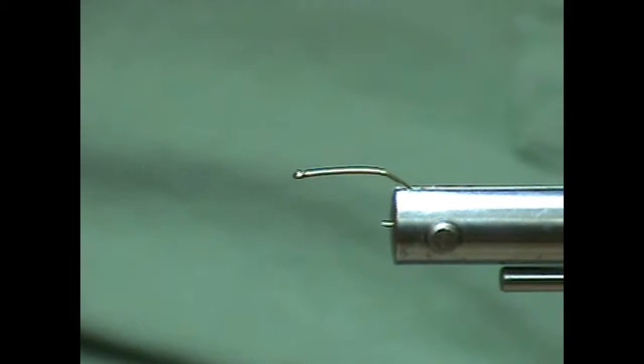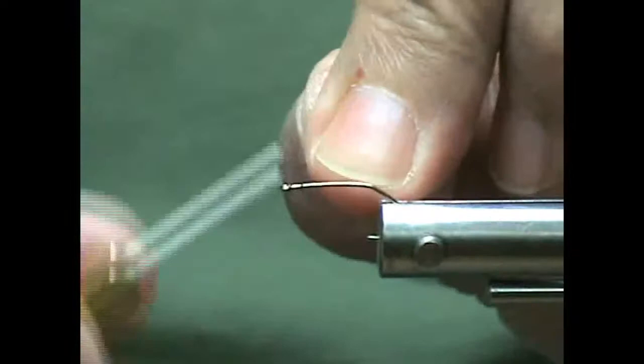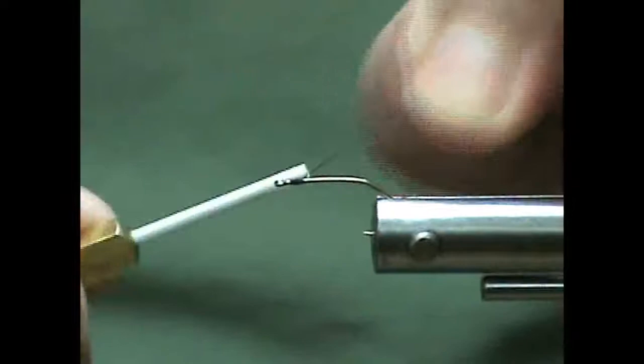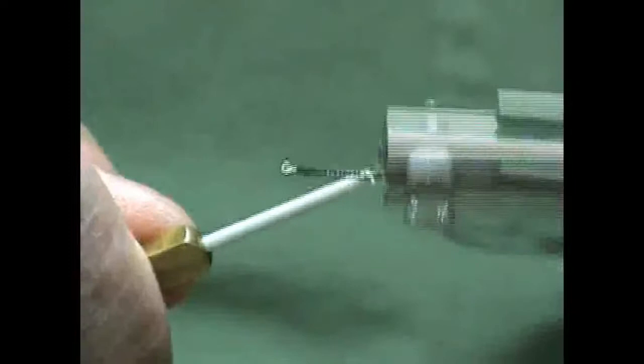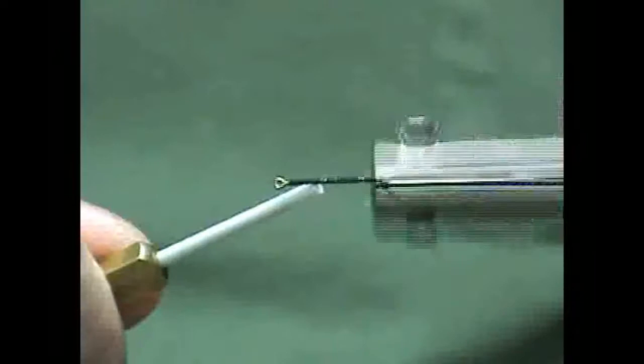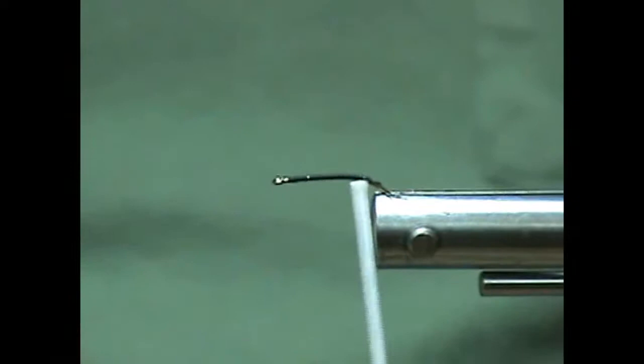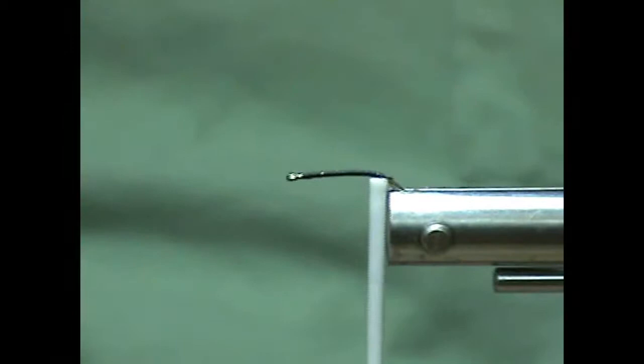I'm using a black 6.0 slightly waxed thread. And the vise I'm using is a norvise and you can see that it's got a really nice rotary design to it. It's like a spinning wheel. Cut off the excess thread.